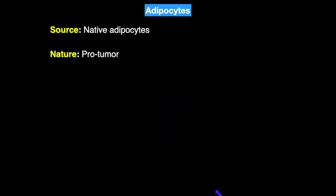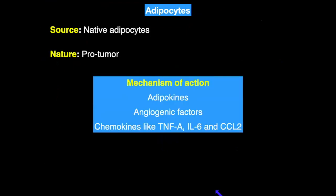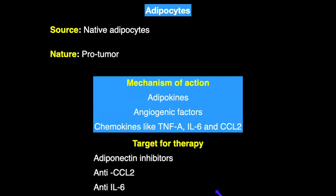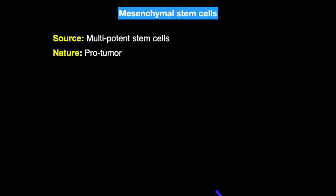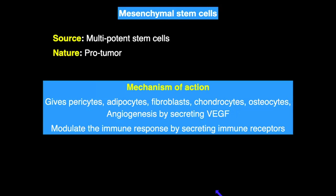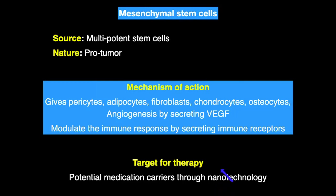Adipocytes are derived from native adipocytes and are pro-tumor in nature through secretion of adipokines, angiogenic factors, and chemokines like TNF-alpha, interleukin-6, and CCL2. Adiponectin inhibitors, anti-CCL2, and anti-interleukin therapies are available. Mesenchymal stem cells are derived from multipotent stem cells and are pro-tumor by giving rise to pericytes, adipocytes, fibroblasts, chondrocytes, and osteocytes, by promoting angiogenesis through VEGF secretion, and by modulating the immune response. The target for therapy here is their use as potential medication carriers through nanotechnology.